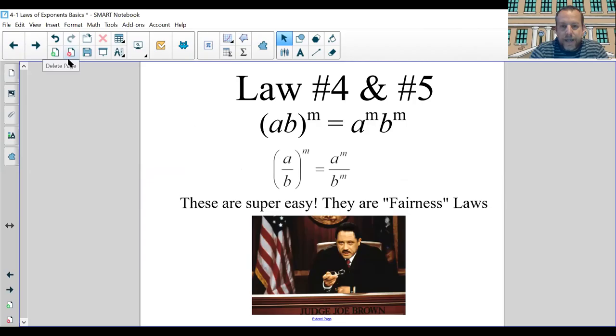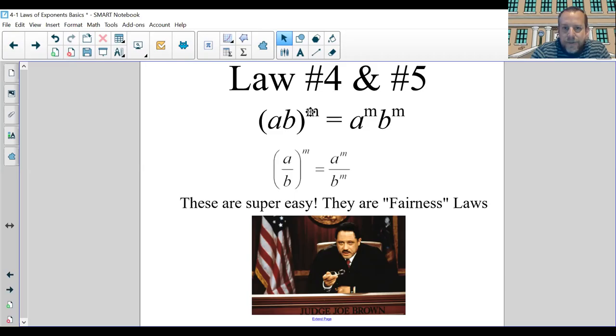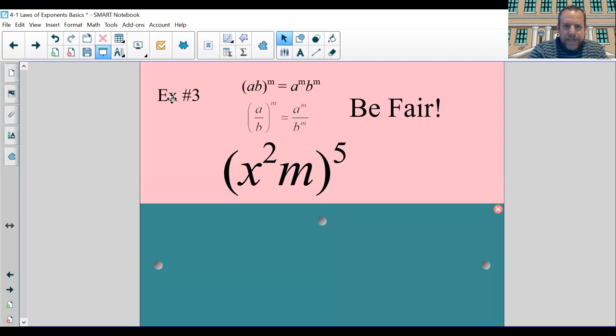All right. Laws four and five are basically the same law. I think these have been the fairness laws. So if you look at how the law is constructed right here, it says if you have different bases being multiplied inside the parentheses to a power, just each of those bases gets that power. Same thing for division. There's no difference on if the bases are being divided or the bases are being multiplied. So those are the fairness laws in my head.